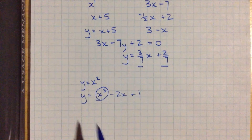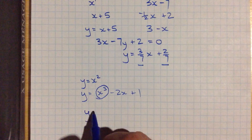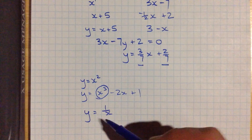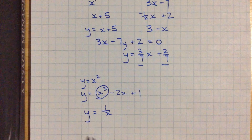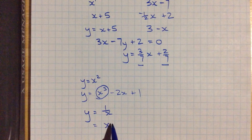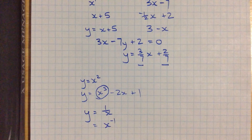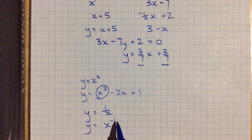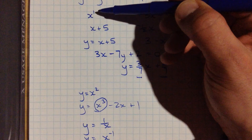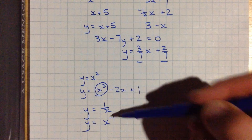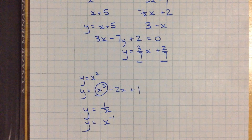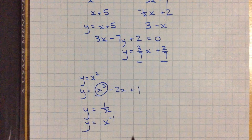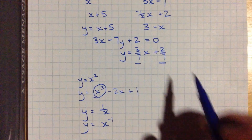How about things like y equals 1 over x? See that x is on the bottom. Another way to write this, if you know your exponent laws, is y equals x to the power negative 1. So that's not an exponent of 1 — that's a negative 1 — so that's not linear. None of these, if you were to graph them, are straight lines — these are all curvy things.